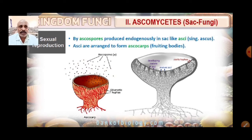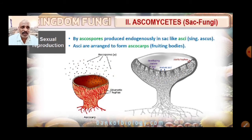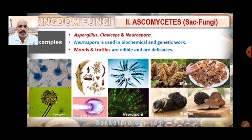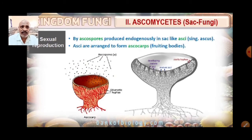Ascospores are produced endogenously — inside the body — in a sac-like structure called an ascus (singular). The plural is asci. The asci are arranged to form the fruiting body called the ascocarp. Within the ascocarp, there is formation of ascospores, produced endogenously by sexual reproduction.